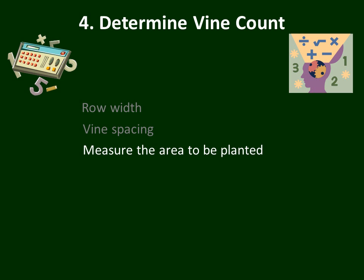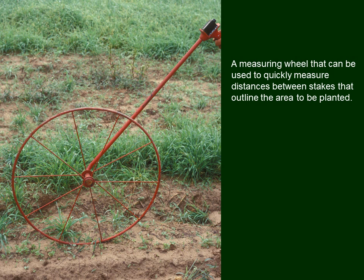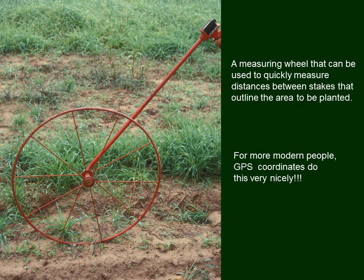In order to determine the vine count, you need to measure the area to be planted. It's often a good idea to make a map so you can see on paper more clearly what you're going to do. This old-fashioned measuring wheel goes around and records revolutions so we can calculate distances close enough for our calculations. Some up-to-date growers now use GPS for establishing coordinates. One way or another, you've got to take some measurements — whether with a measuring tape, a measuring wheel, or GPS.